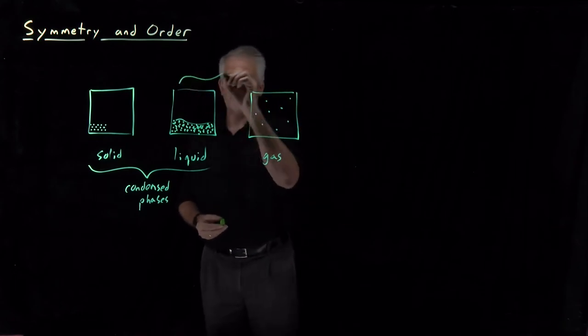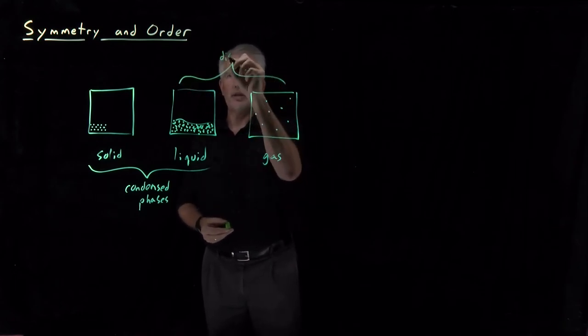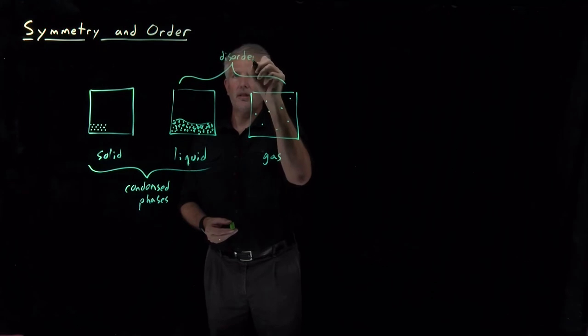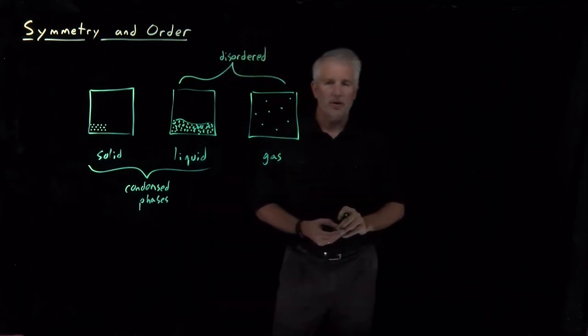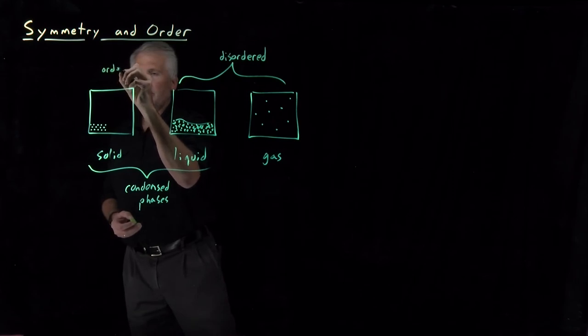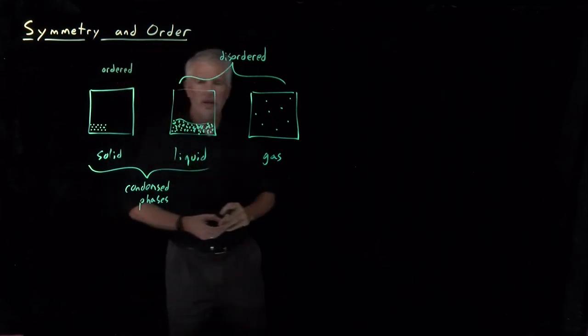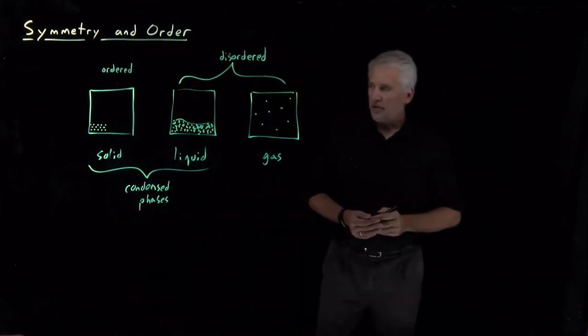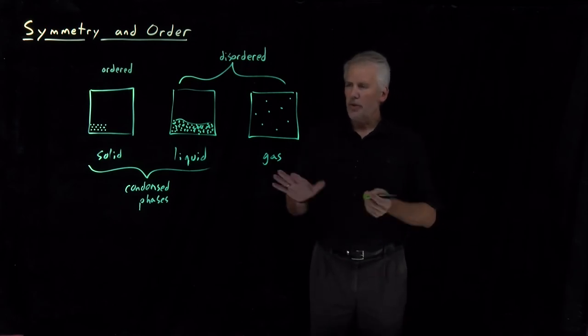So these would be phases that we could call disordered. The gas is randomly distributed or disordered as well. The solid is an ordered phase. And that's really the next point we're going to discuss in any detail, is what do we mean by order?